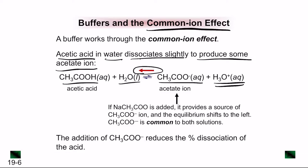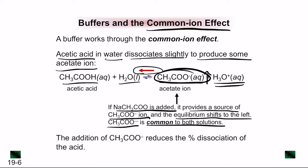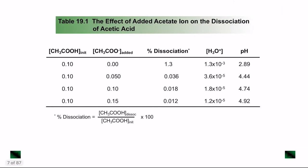When sodium acetate is added, it provides a source of the acetate ion, causing the equilibrium to shift further to the left. CH3COO⁻ is common to both solutions — adding more of it pushes the equilibrium to increase the amount of acetic acid, creating the common ion effect. The addition of CH3COO⁻ reduces the amount of dissociation of the acid. This is the common ion effect.